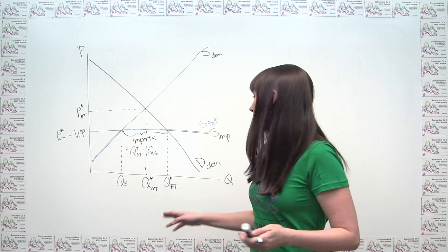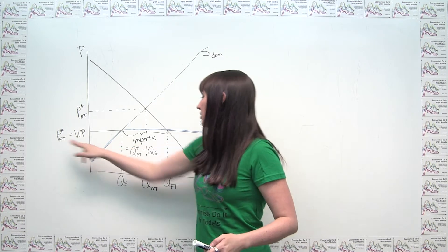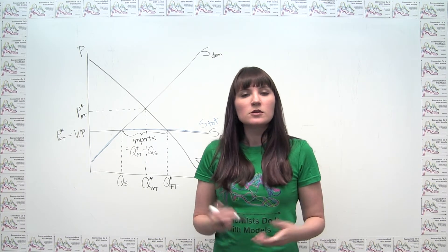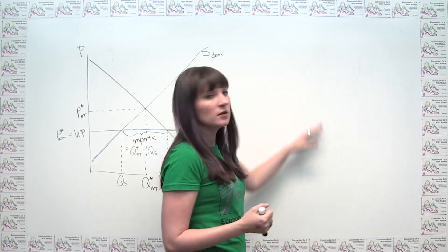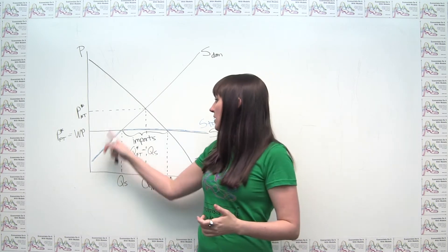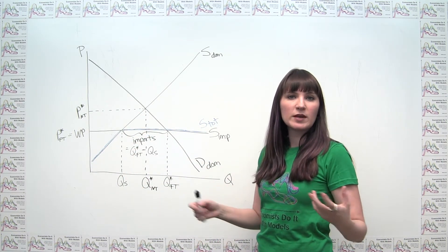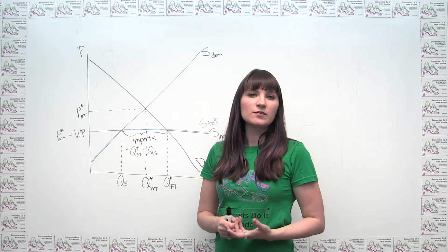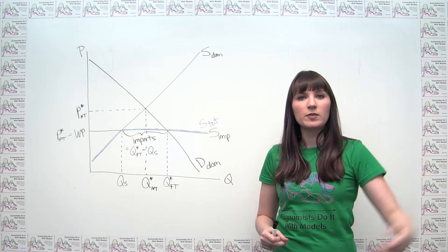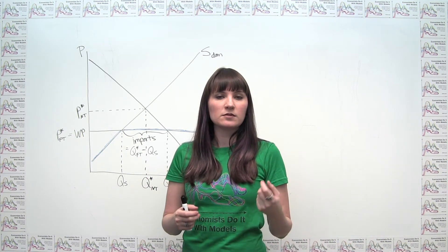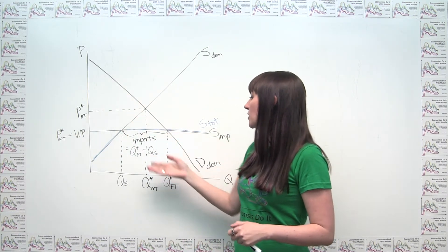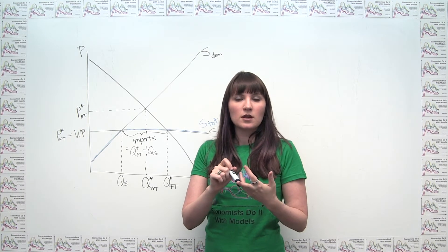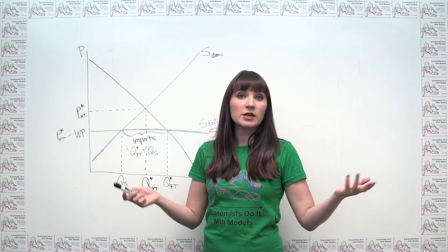Now that we've figured out our market outcomes under no trade and under free trade, we can address consumer surplus, producer surplus, total surplus, and so on. When we have no trade and free trade with no government intervention, we're only concerned with the welfare of domestic producers and consumers — in this simple model, we're not making it our business to care about the welfare of other countries. So let's keep our focus on the domestic world.